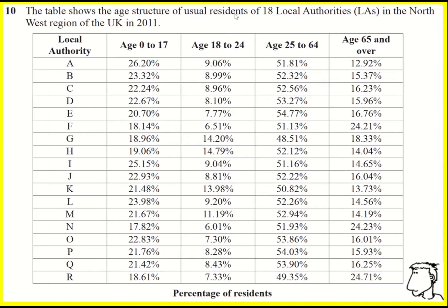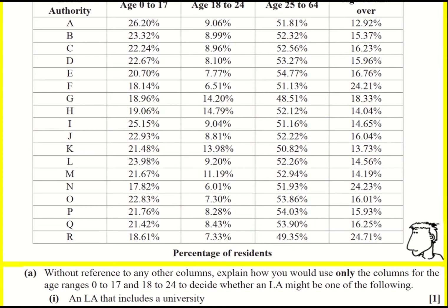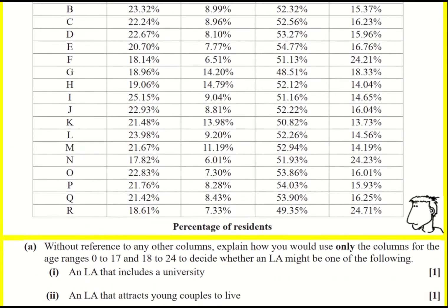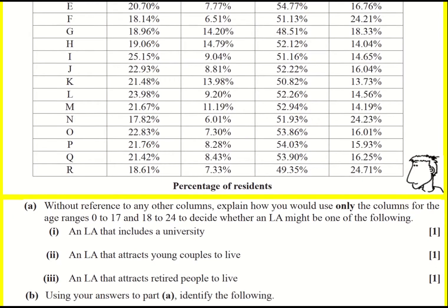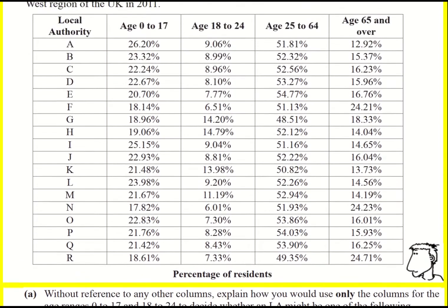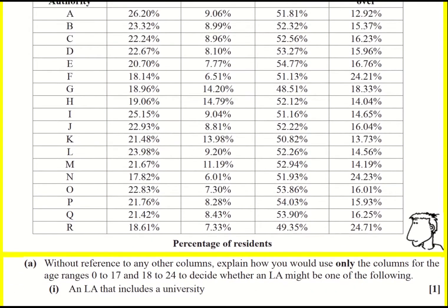Hi Kevin. A table on the age structure of usual residents of 18 local authorities in the north west of the UK. So this is from the large data set. The good news is that you can answer this question without having ever studied it — obviously you've got an advantage if you have looked at it in the past. We're asked to only look at columns 0 to 17 and 18 to 25 and decide whether a local authority might include a university to start with.